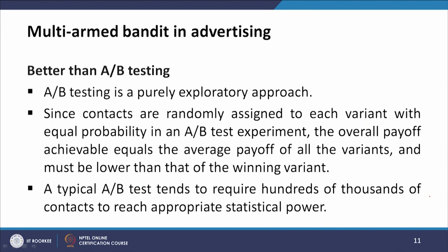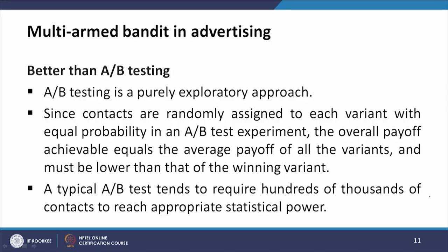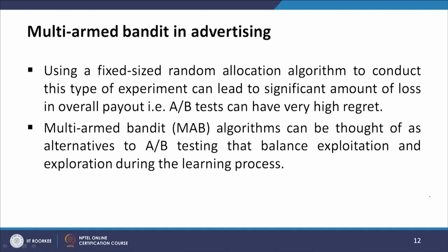Multi-armed bandits are better than A-B testing. A-B testing is a purely exploratory approach. Since contacts are randomly assigned to each variant with equal probability in an A-B test experiment, the overall payoff equals the average payoff of all variants and must be lower than that of the best variant. A typical A-B test requires hundreds of thousands of contacts to reach appropriate statistical power, and using a fixed-size random allocation algorithm can lead to significant loss in overall payout. In other words, A-B tests can have very high regret.